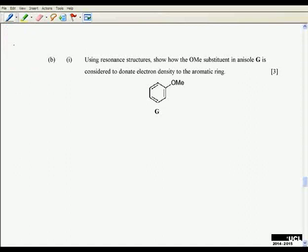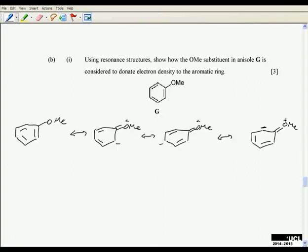On to question b, part one. Here we're being asked how the methoxy group donates electron density to the aromatic ring, and this is purely material from lecture notes. Just drawing those resonance structures will give you the marks in that part.